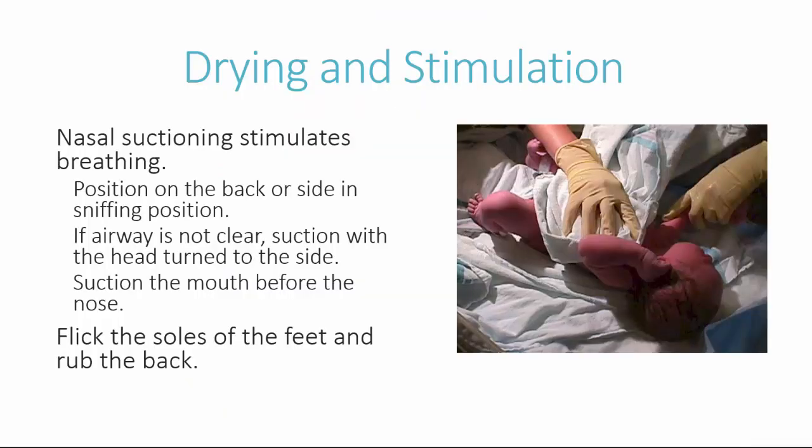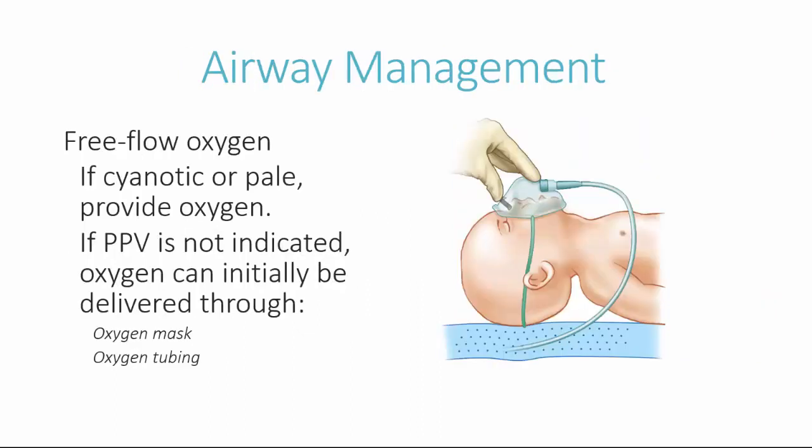For drying and stimulation, after ensuring airway patency, dry and stimulate the newborn. Nasal suctioning stimulates the newborn to breathe. Position the infant on the back or side with the neck in the sniffing position. If the airway is not clear, suction with the head turned to the side. Suction the mouth before the nose, and stimulate by flicking the soles of the feet and gently rubbing the back. Free flow oxygen can be considered if the newborn is cyanotic or pale and positive pressure ventilation is not indicated, delivered through an oxygen mask or tubing at around five liters per minute.